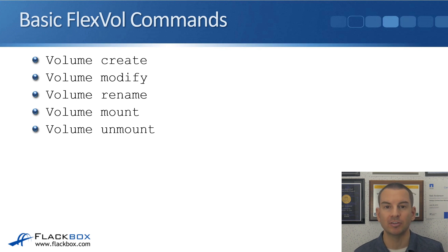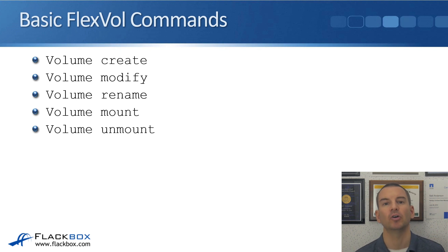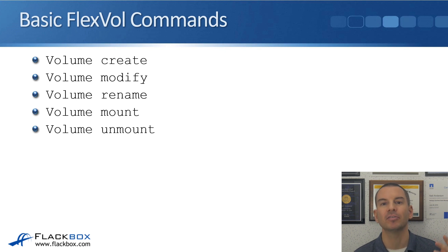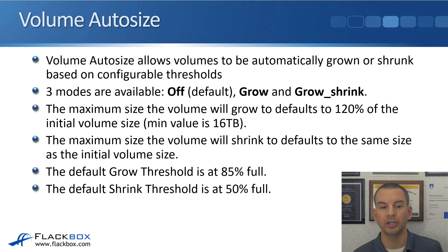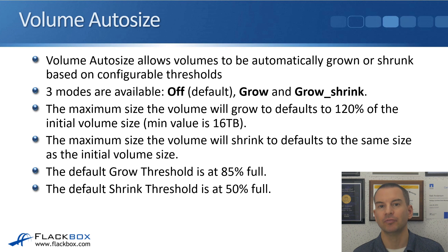I'm going to show you these in the lab demo. Some of the other operations that we can carry out on our volumes, I want to give you more information about those particular operations now. The first one is volume auto size. This allows your volumes to be automatically grown or shrunk based on configurable thresholds, and this is configured at the volume level, so different volumes can have different settings.